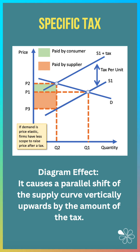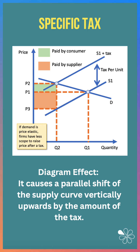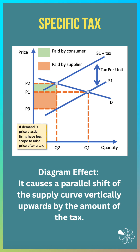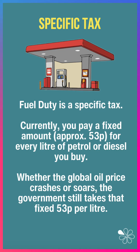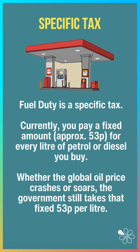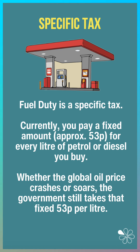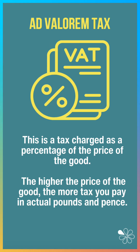The effect on the diagram is to cause a parallel shift of the supply curve vertically upwards by the amount of the tax, as shown. Fuel duty, for example, is a specific tax in the UK — it's about 53p per litre of petrol or diesel you buy. So regardless of the world price of crude oil, the government still takes that fixed 53p per litre.